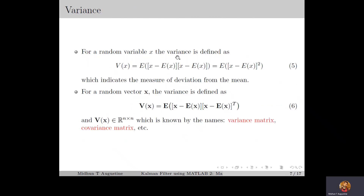Now for a random variable x, the variance is defined as in equation number 5, which indicates the measure of spread or average deviation from the mean. Here x minus E of x denotes the deviation of the random variable from its mean. The variance represents the expected value of the squared deviation from the mean. So if the variance is less, the random variable is more centered around its mean — in other words, the randomness in the variable is less. Similarly for the random vector x, the variance is an n by n square matrix, known by the names variance matrix, covariance matrix, variance-covariance matrix, dispersion matrix, etc.